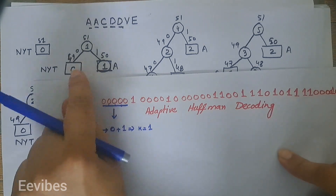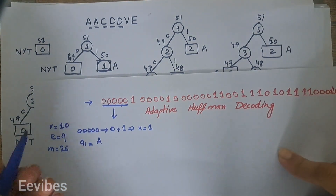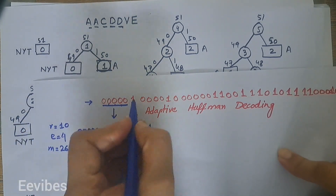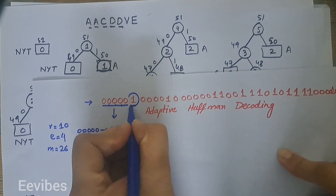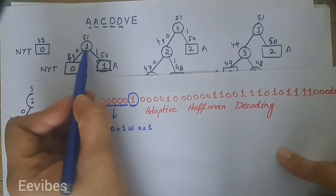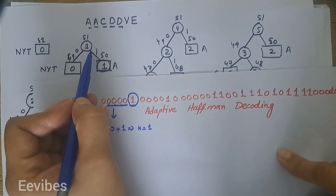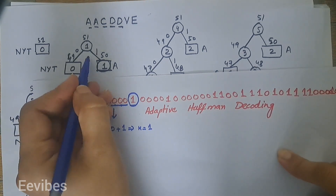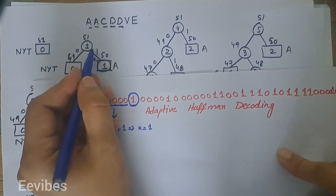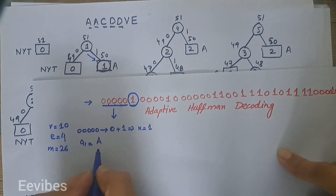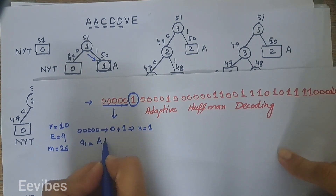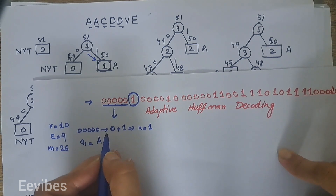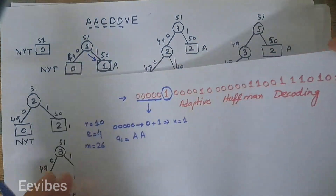Once symbol 'a' is identified, the tree is updated. We then continue constructing the tree just as in the encoding procedure. Next we read the next bit, which is 1. If we are at the root and trace the path from the root node to the external node, bit 1 corresponds to 'a' since its weight is 1. So the next decoded symbol is 'a'.